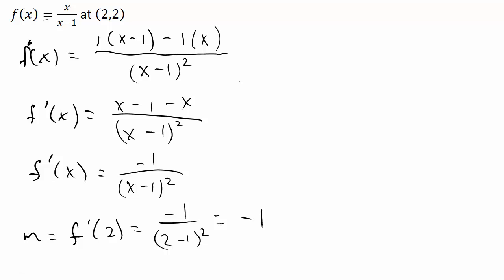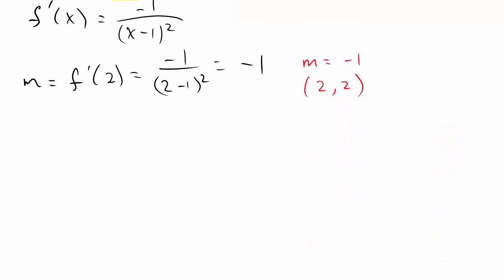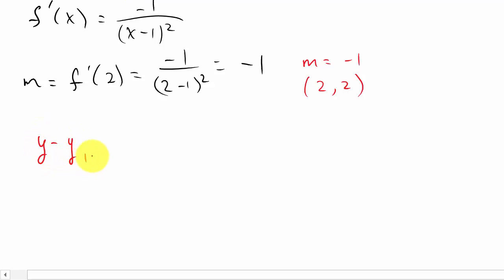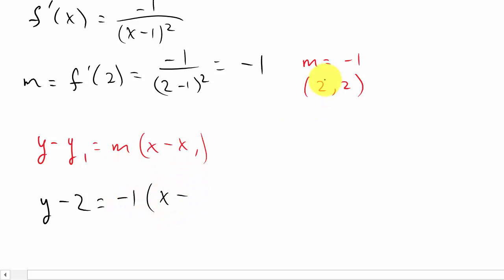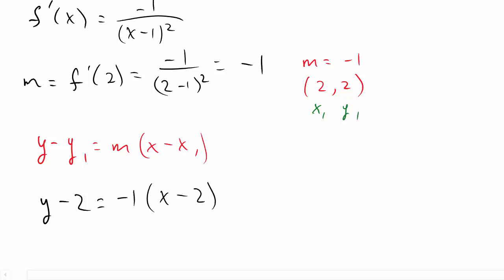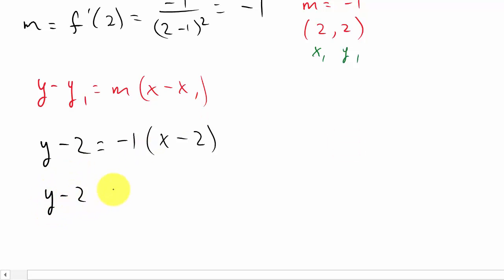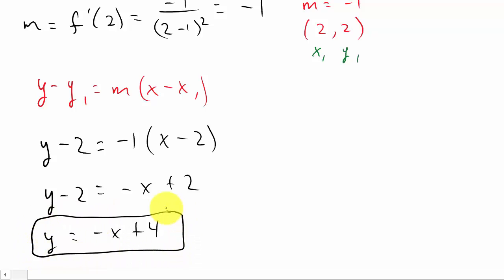So our slope is negative 1 and our point is (2, 2). We're finding the equation of the line that has a slope of negative 1 and passes through the point (2, 2). We can use the point-slope form of the line — that's y minus y1 equals m times x minus x1. We plug everything in: y minus 2 equals negative 1 times x minus 2. So we get y minus 2 equals negative x plus 2, and therefore y equals negative x plus 4. And there's our answer.